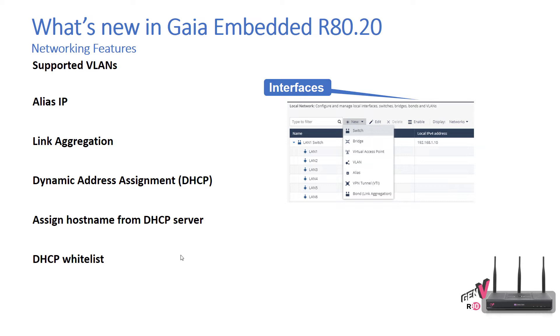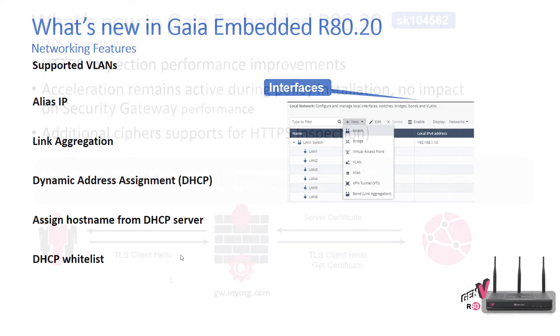And the DHCP whitelist, allowing you to configure your network so IP addresses are assigned by the internal network DHCP server only for known hosts. DHCP requests from other hosts are ignored.